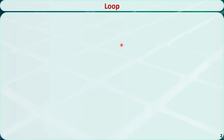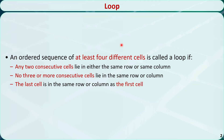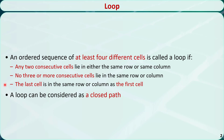First of all, what is a loop? A loop is an ordered sequence of at least four different cells that satisfy all three conditions. The first condition is that any two consecutive cells should lie in either the same row or the same column. The second condition is that no three or more consecutive cells should lie in the same row or column. The third condition is that the last cell must be in the same row or column as the first cell. You can consider a loop as a closed path.